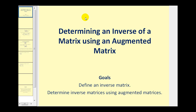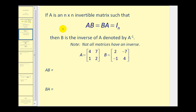Welcome to a video on determining the inverse of a matrix using augmented matrices. If A is an n by n invertible matrix such that A times B equals B times A, which equals the identity matrix, then B is the inverse of A, denoted with this inverse notation.